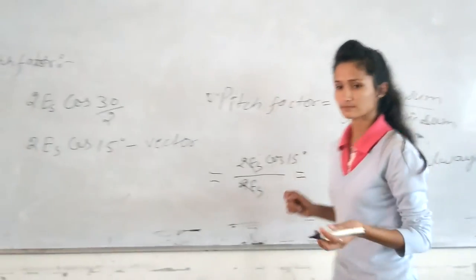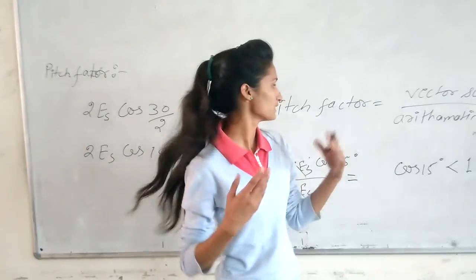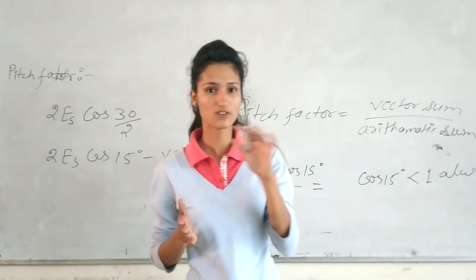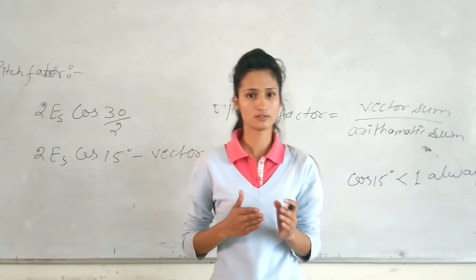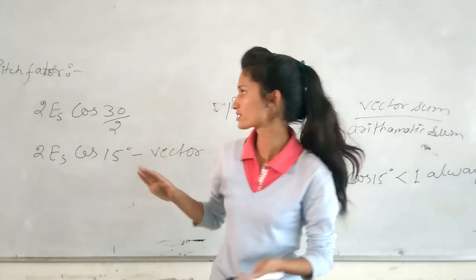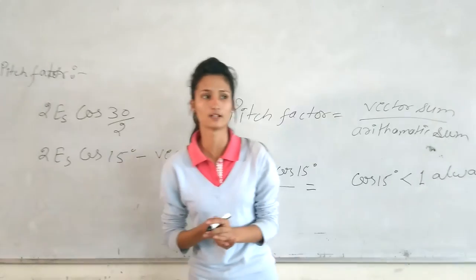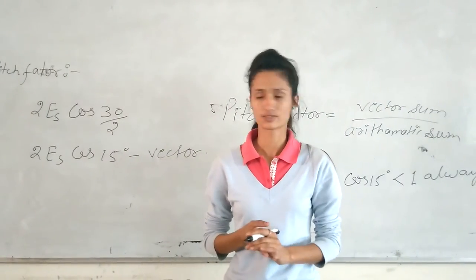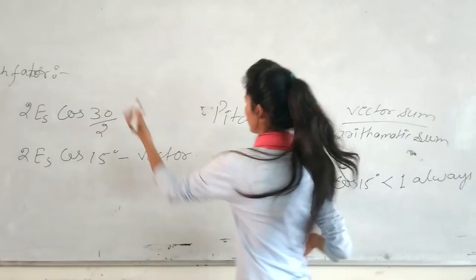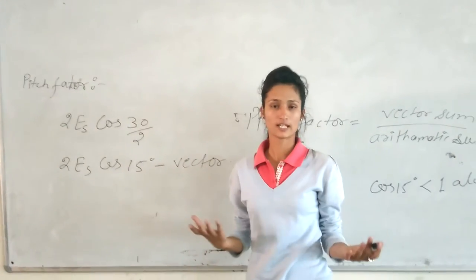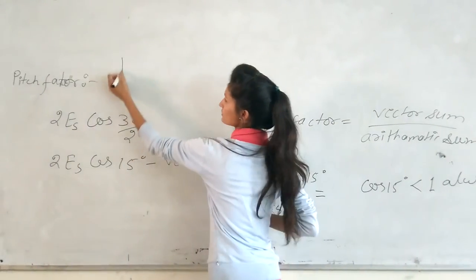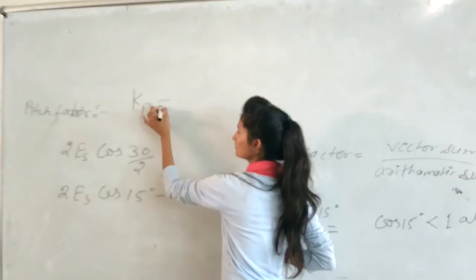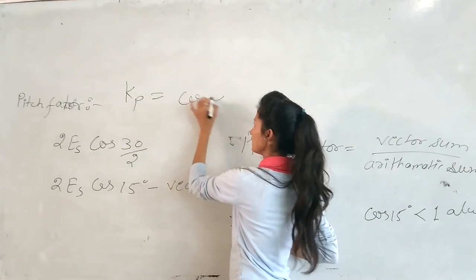In general, we see the pitch factor is equal to cos alpha by 2. So this is cos alpha by 2.